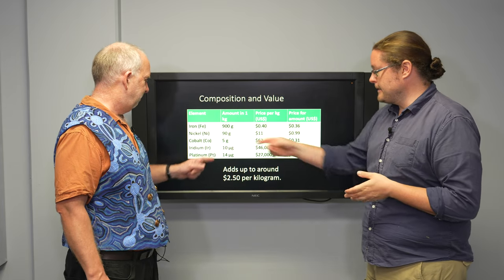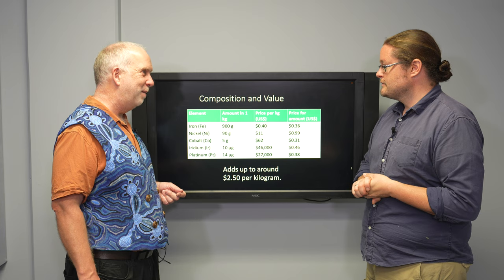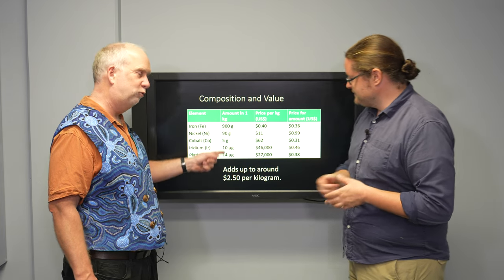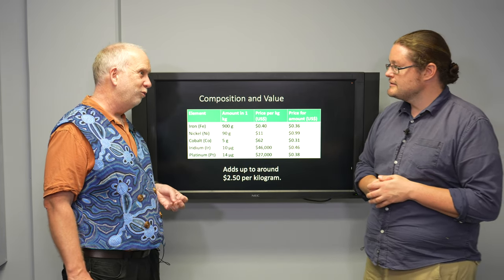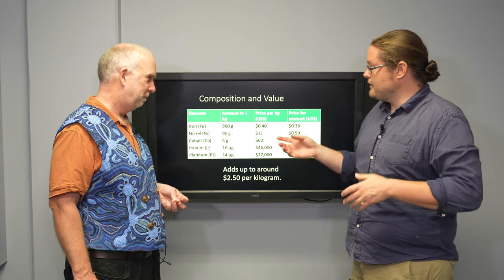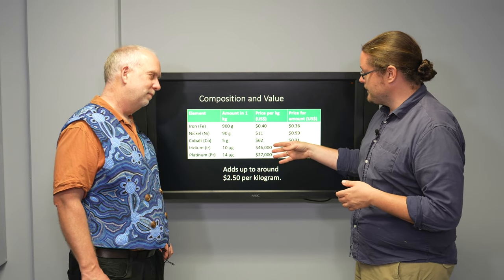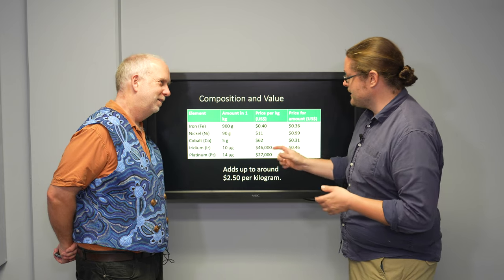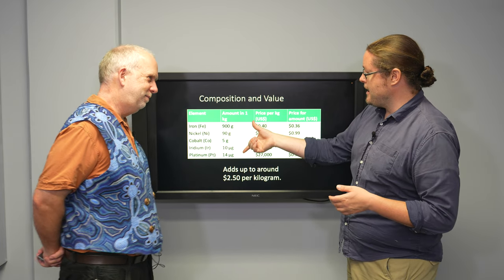But the real value is iridium and platinum and other rare elements like that. They're tiny amounts, only micrograms, but still a lot more than you find anywhere on earth. So I guess this is the interesting thing, right? It's looking at what is the price per gram we can get, but how do we get more grams of this?